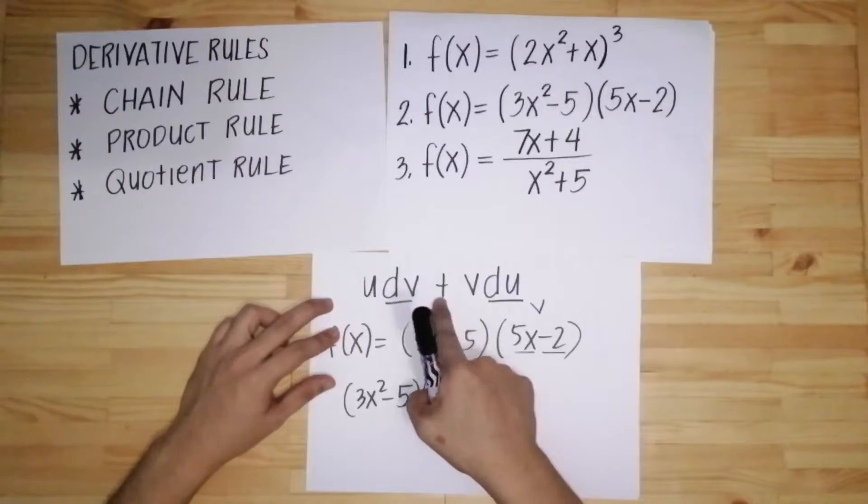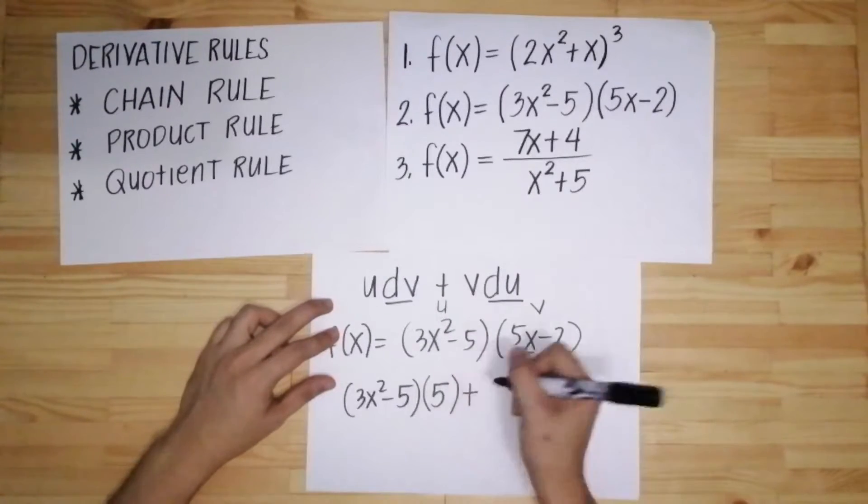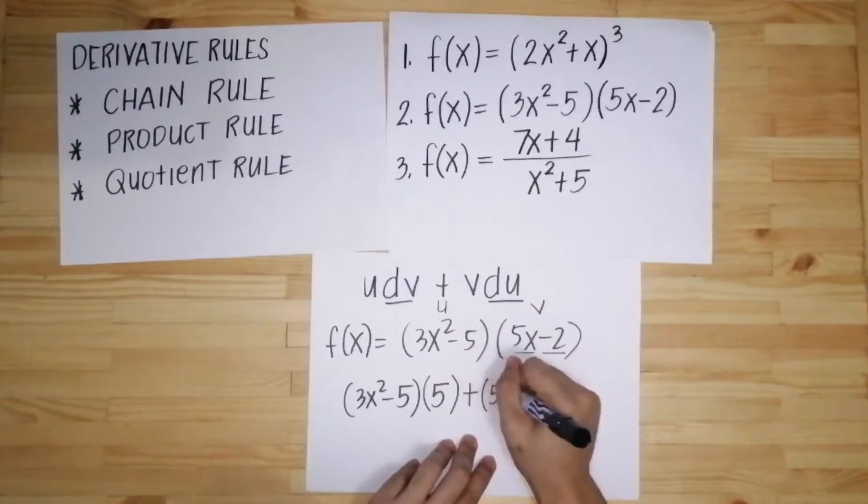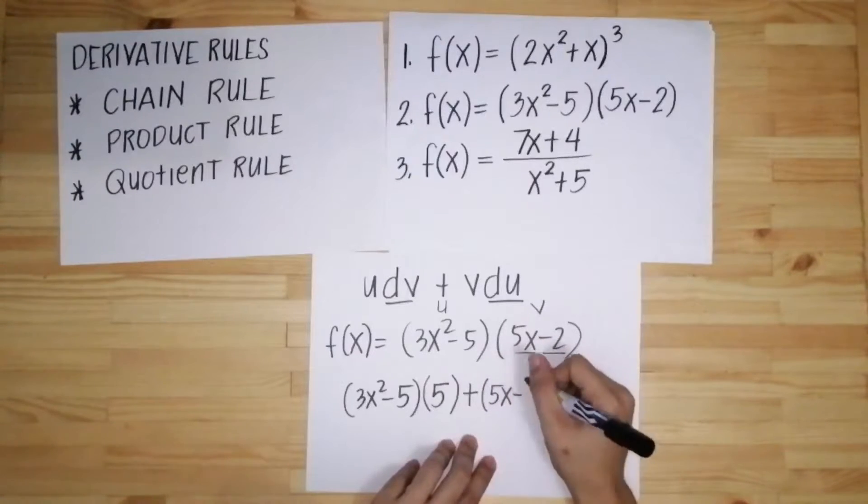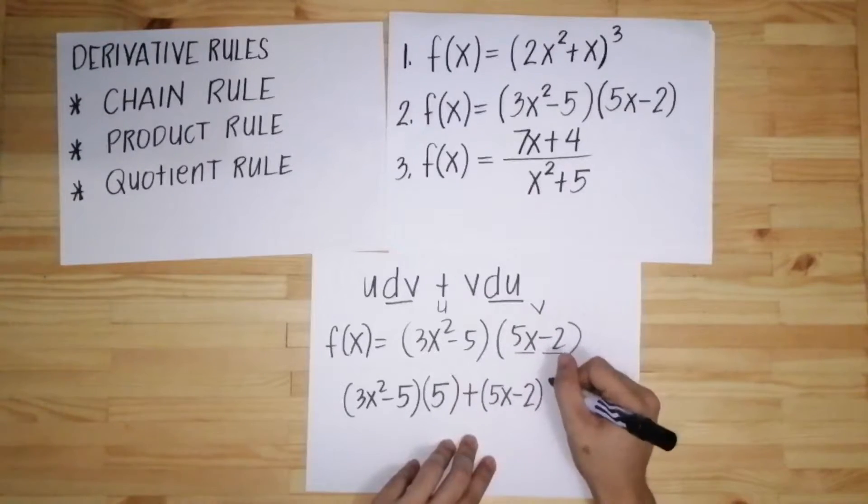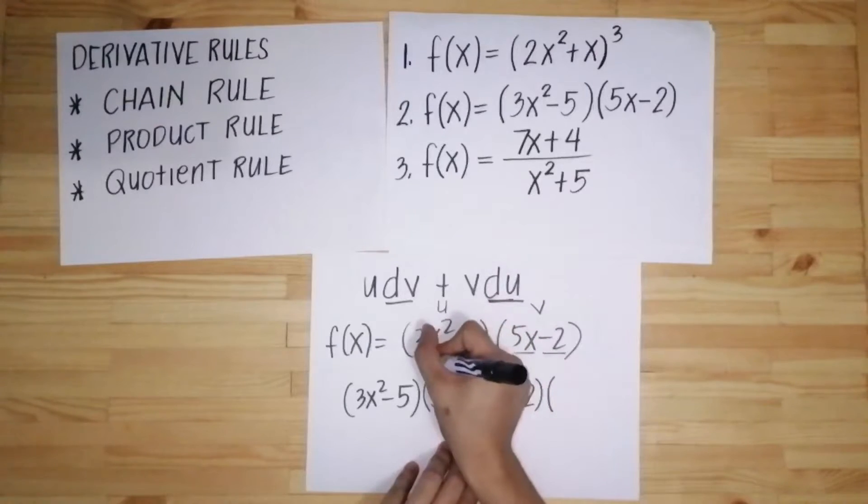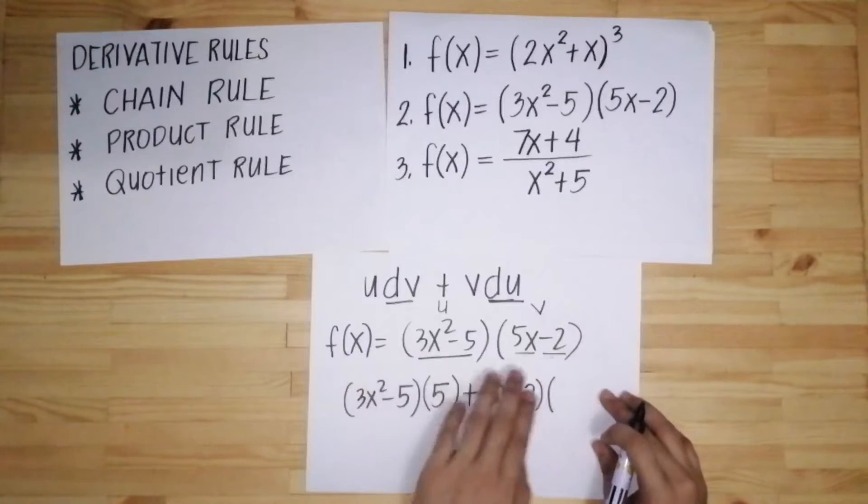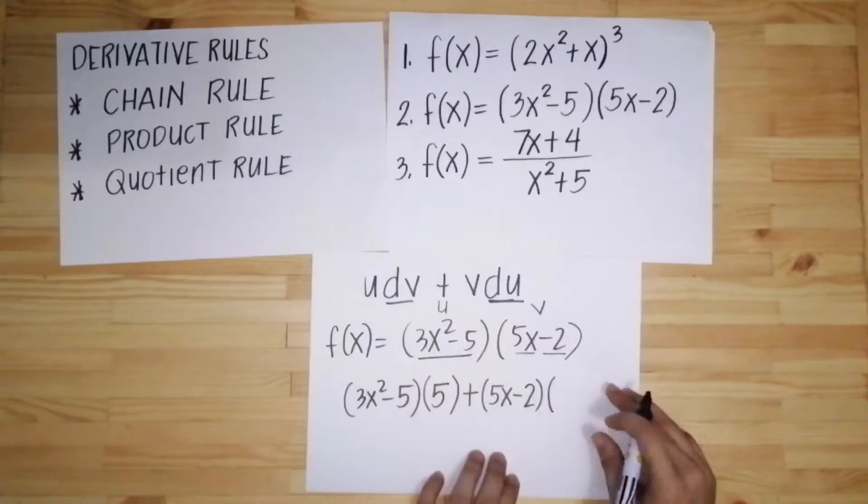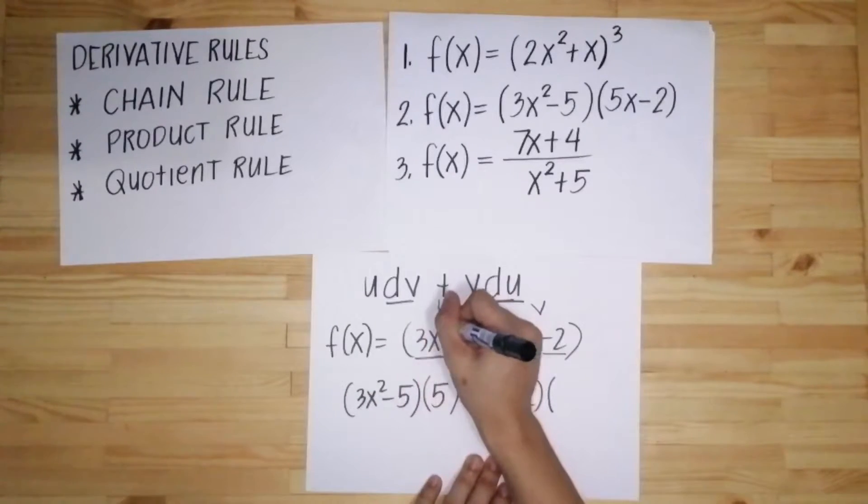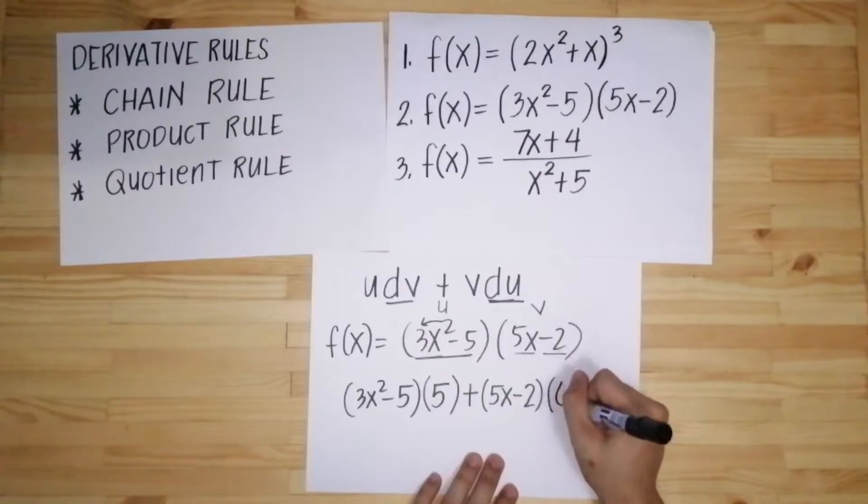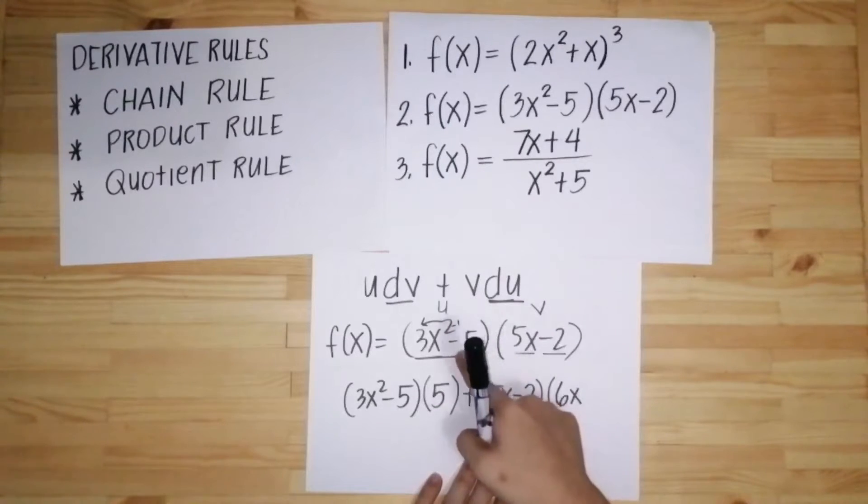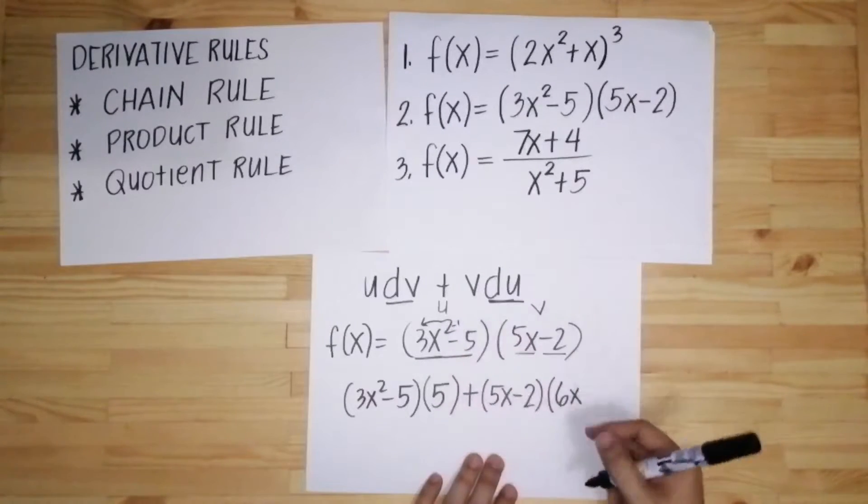Next, copy mo itong plus. Copy mo yung v, v is 5x minus 2. Ngayon siya naman kukopyahin, then multiplied to du. Ngayon derivative naman ito. Copy mo ito times derivative neto. So derivative neto ay 2 times 3, that is 6. Then yung x squared magiging x na lang kasi minus 1. Then negative 5 is a constant, it will become 0.